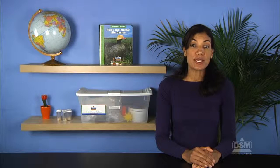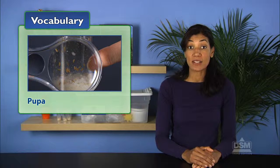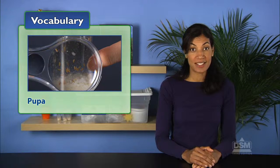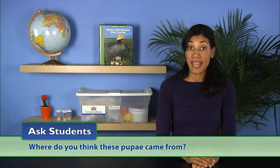Inform students that pupa is the stage of development between the larva and adult that organisms undergo during metamorphosis. Ask students where do you think these pupae came from. Students may be able to speculate that the larvae crawled to a certain place and formed a hard shell around themselves.